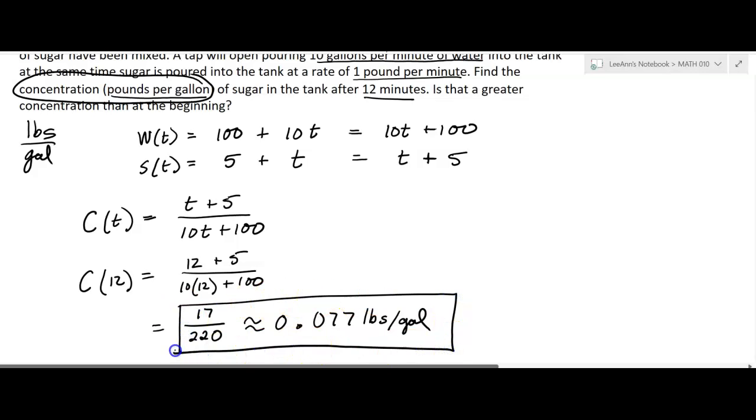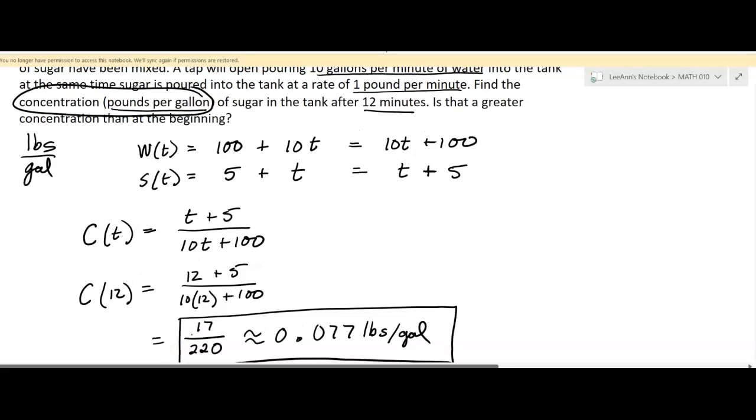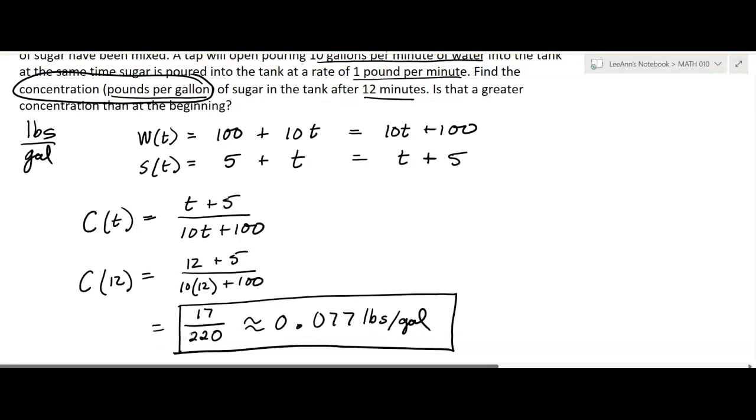That was part of what they wanted us to do. And then it says, is that a greater concentration at the beginning? Well, at the beginning, before we opened the taps, we had 5 pounds of sugar to 100 gallons of water. So you could think of C of 0 if you wanted to do it that way.